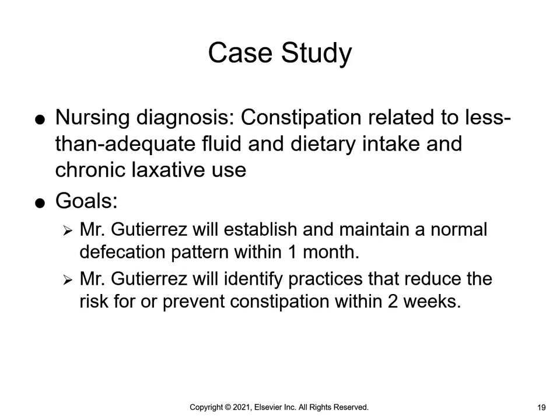Anticipated outcomes demonstrating achievement of goals include: Mr. Gutierrez will have a bowel movement within 48 hours; his abdomen will be soft, non-distended, and non-tender within 24 hours; he will pass soft formed stools at least every three days; he will identify the need to increase fiber content of his diet within one week; he will immediately discontinue laxative use and use fiber supplements when necessary; and he will identify the need to drink eight 8-ounce glasses of non-caffeinated beverages within three days.